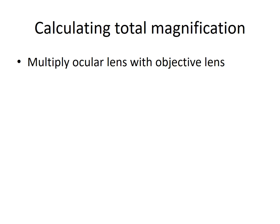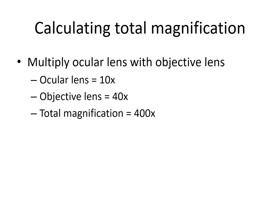Now let's get into calculating total magnification. Total magnification is a simple calculation — you take the magnification of the ocular lens and multiply it by the objective lens. For example, if the ocular lens is 10x and the objective lens is 40x, you multiply those two values together — 10 times 40 — to get a total magnification of 400x. This is an important calculation to remember because it will likely show up on a practical quiz.